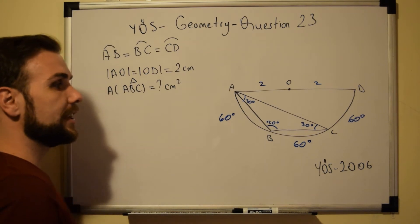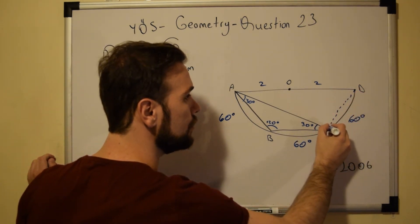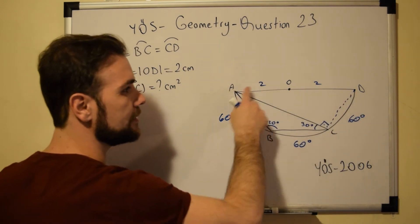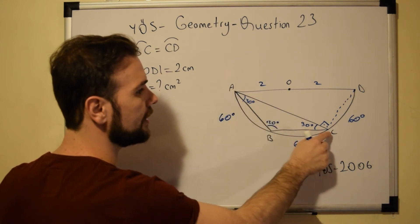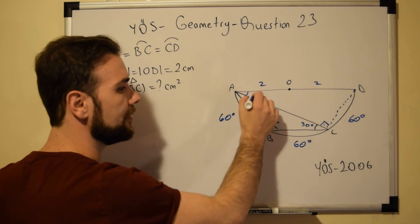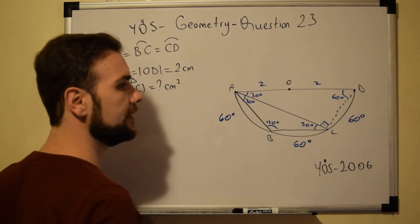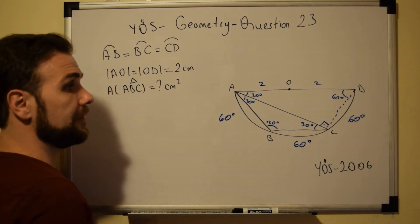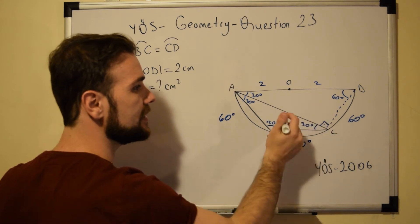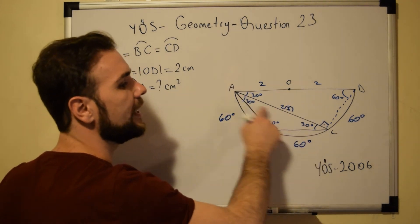To find the area of triangle ABC, I will draw a perpendicular line to AC, creating a 90 degree angle and a right triangle. The interior angle CAD faces chord DC which is 60 degrees, so this angle equals 30 degrees. With 30 and 90 degrees, the remaining angle is 60 degrees. Since the side in front of the 90 degree angle is 4, the side in front of the 60 degree angle is 2√3. These rules apply to special triangles.